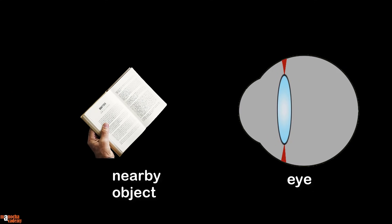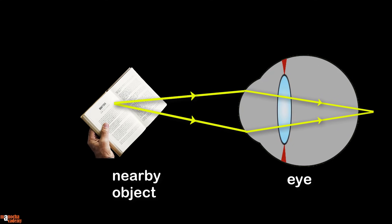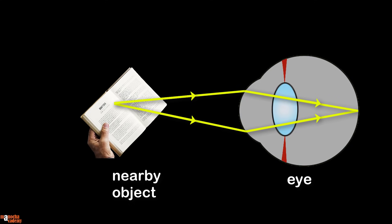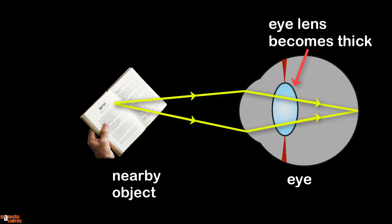Now let's say the eye is looking at a nearby object like a book. Since the book is close to the eye, the rays from it are not parallel — they are divergent. So if the eye makes no adjustment, the image will be formed behind the retina and the book will appear blurred. The eye needs to increase the converging power of the eye lens. The ciliary muscles contract, making the suspensory ligaments loose. The flexible eye lens bulges under its own elasticity and becomes thicker, so we get a clear image on the retina.